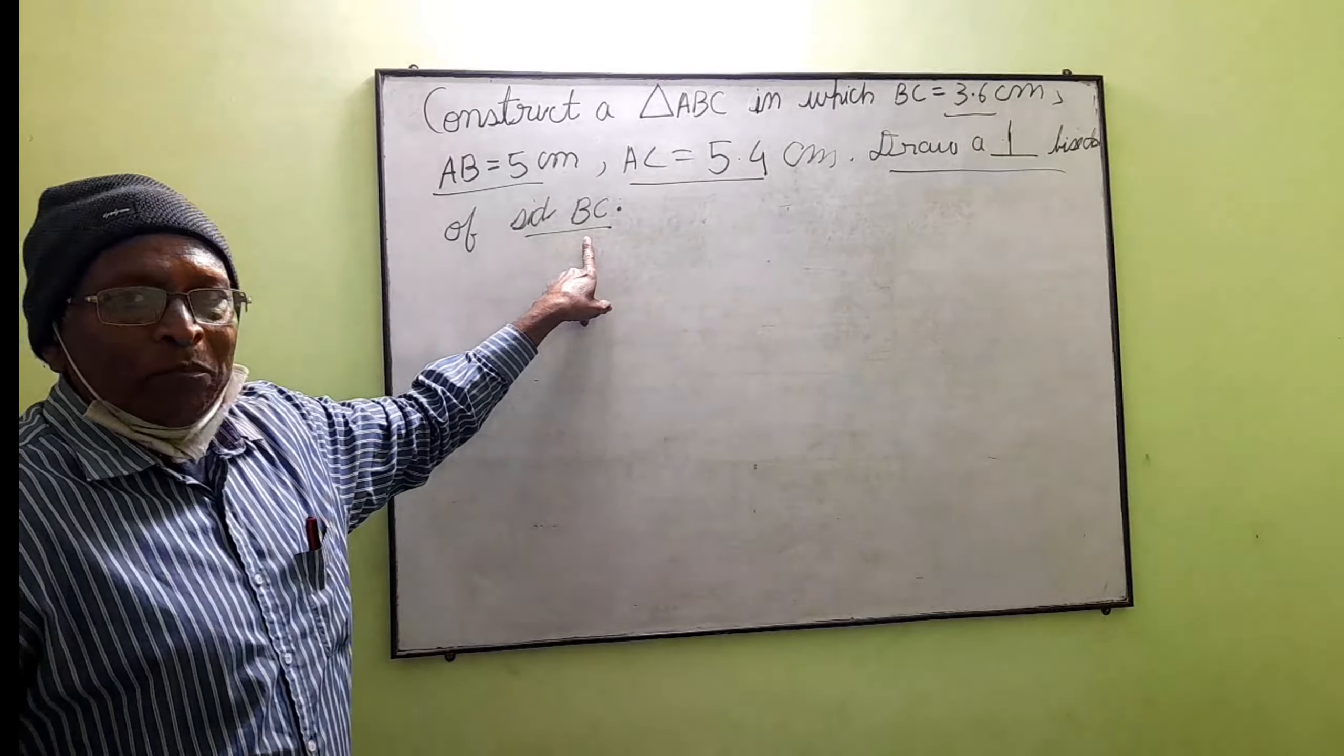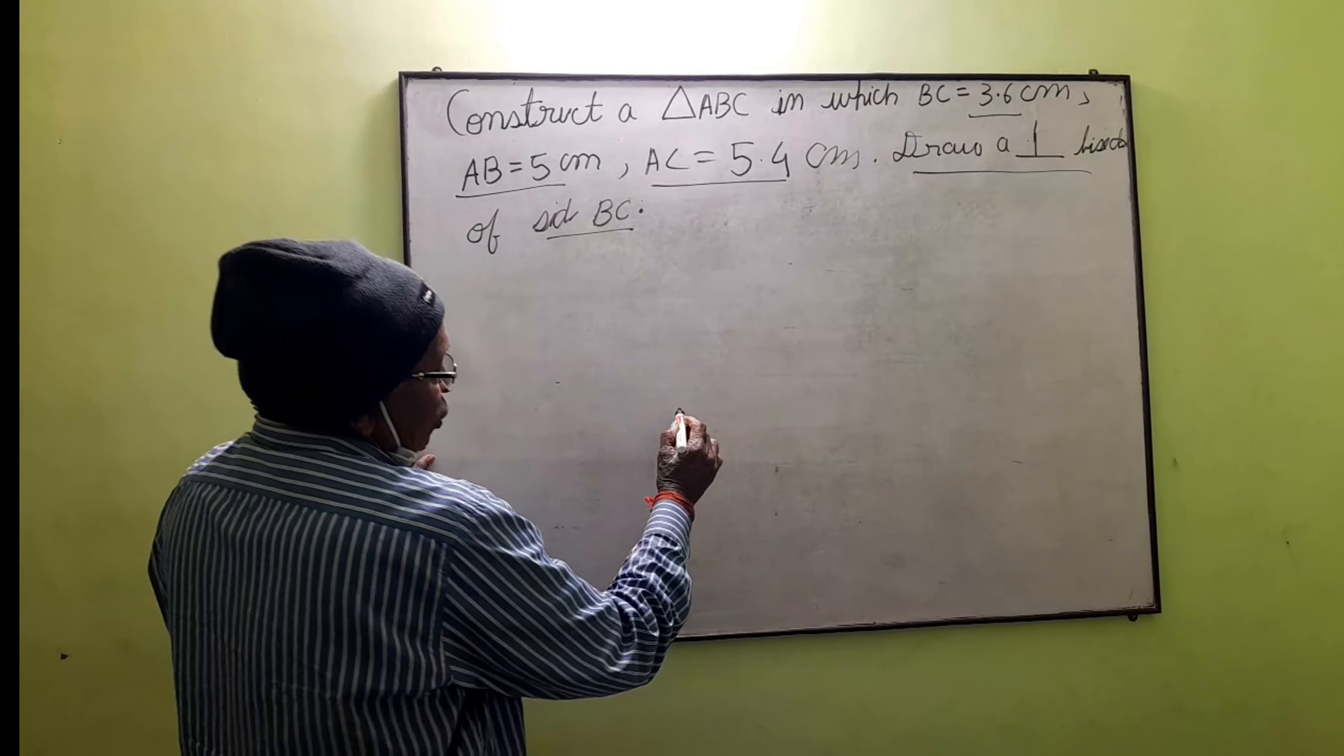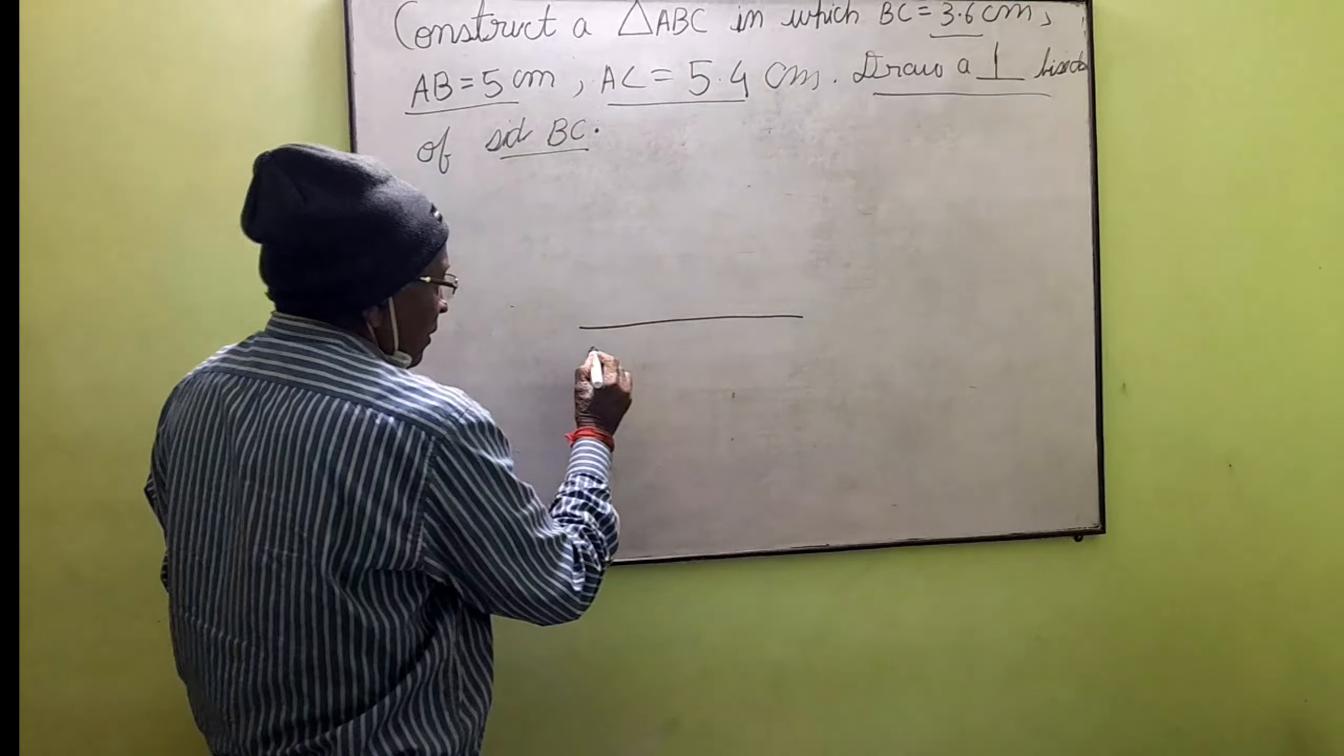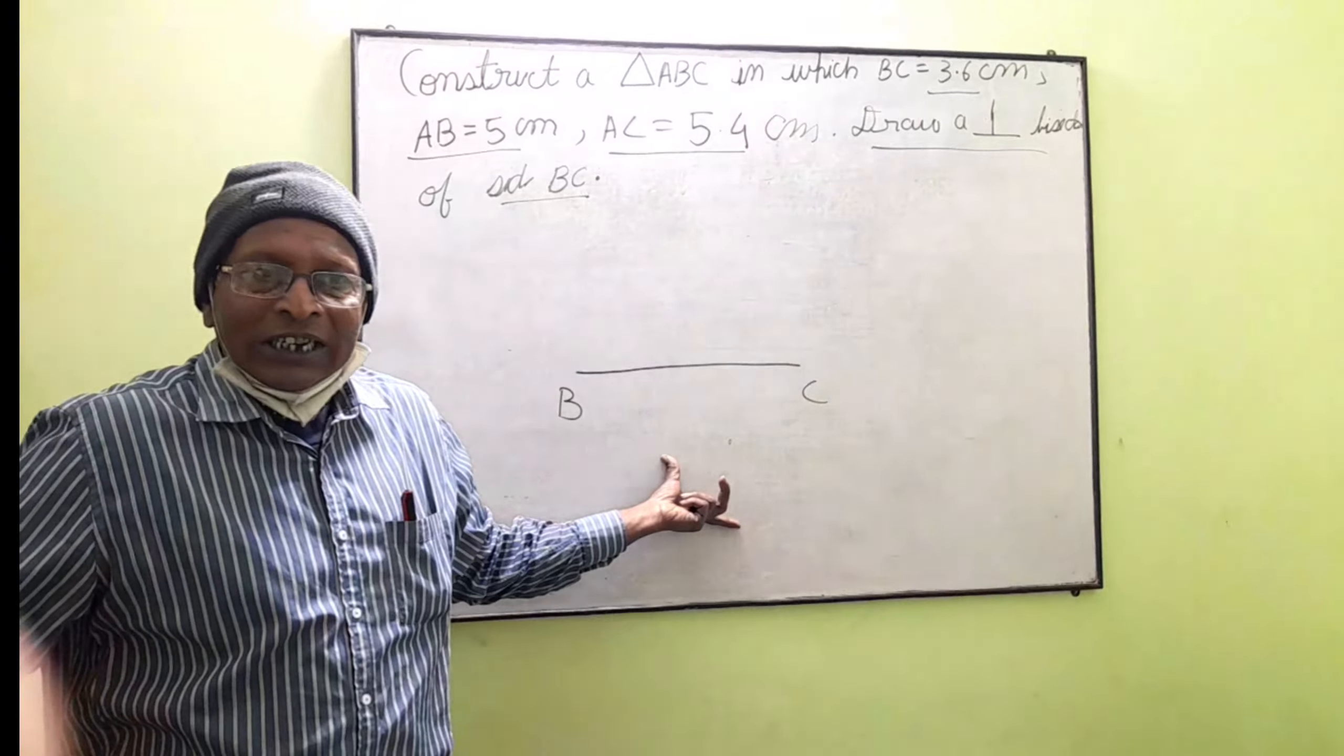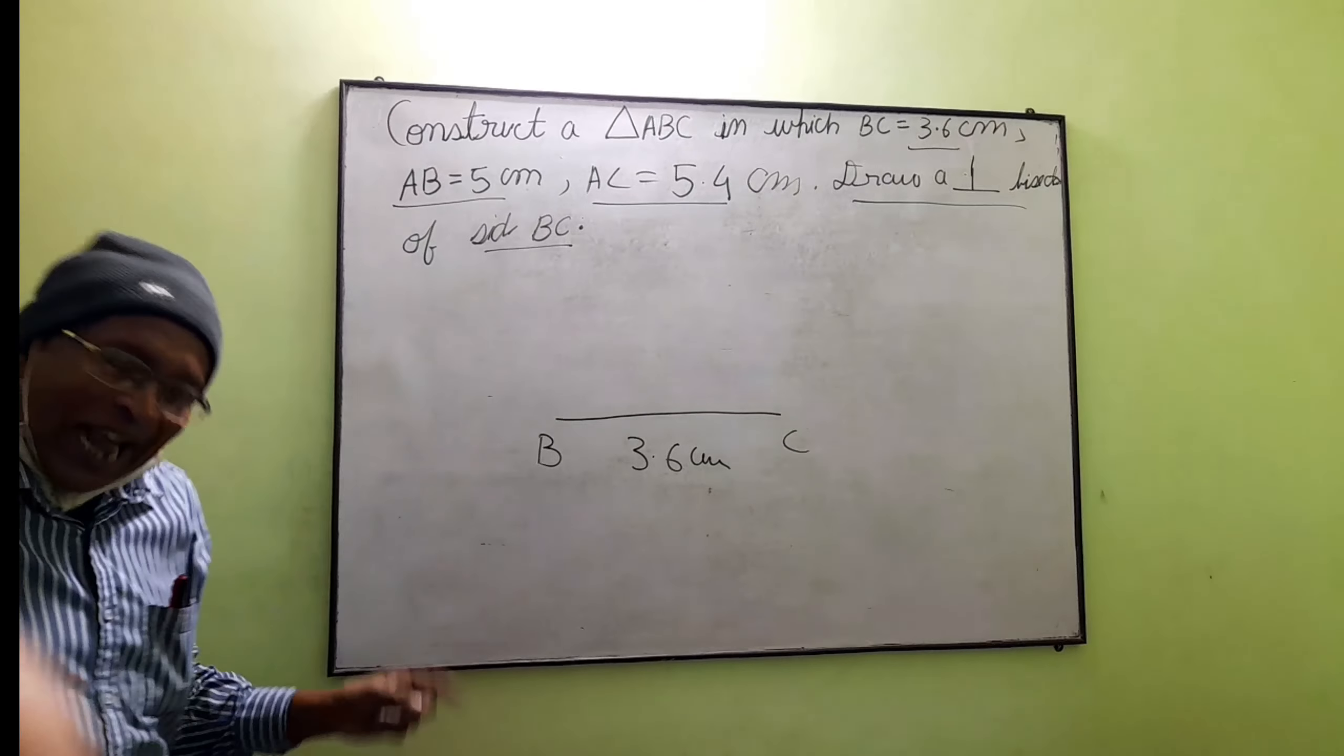What is the measure of BC? 3.6 centimeters. So you will draw first of all 3.6 centimeters, and it is BC. This is 3.6 centimeters.